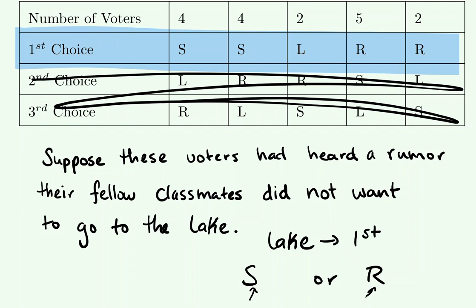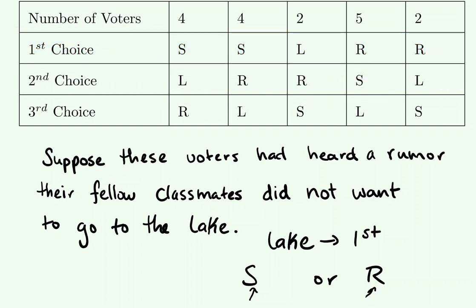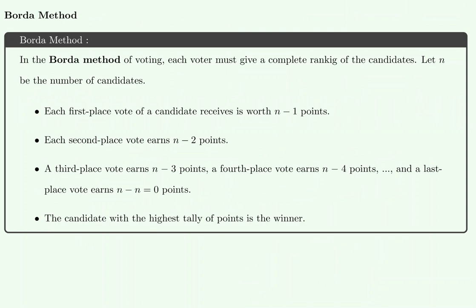There are different voting methods that try to accommodate the idea that people's preferences are not always strictly either you like this or you like that. These are ranked voting methods that still allow people to vote for their main preference but still have a say in the voting if that main preference doesn't turn out to be the plurality winner. In the next video we are going to introduce the Borda method, which is a ranked voting method.